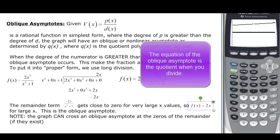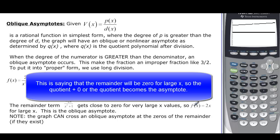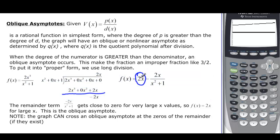So when the degree is greater, this makes a fraction of an improper fraction, like 3 over 2. To put it in proper form, we would use long division, and I've worked this particular problem out for you to show you what we get. 2x minus, and then the result when we subtracted these two, it gave us negative 2x as a remainder, and we put that over our divisor. So the remainder, that negative 2x, gets close to 0 for very large x values. So f(x) equals 2x for large values. That's what it will be. This part right here becomes our oblique asymptote.